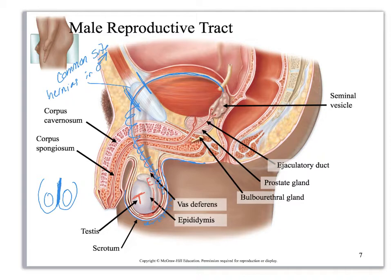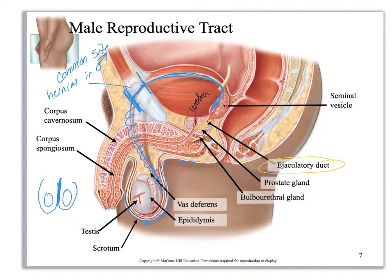The spermatic cord ends at the inguinal canal, and then the vas deferens goes through the canal. Just inferior to the vas deferens is the seminal vesicle. The seminal vesicle and the vas deferens both empty into the ejaculatory duct. The urethra comes out of the bladder as the prostatic urethra; the ejaculatory duct empties into it. Going through the urogenital diaphragm, it becomes the membranous urethra, then the penile urethra.